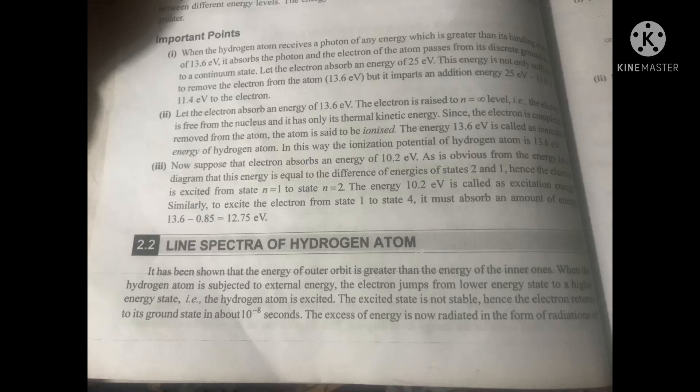We are going to discuss the line spectrum of hydrogen atom. It has been shown that the energy of outer orbits is greater than the energy of inner ones. When the hydrogen atom is subjected to external energy, the electron jumps from a lower energy state to a higher energy state — that is, the hydrogen atom is excited. The excited state is not stable; hence the electron returns to its ground state in about 10 to the power of minus 8 seconds. The excess energy is radiated in the form of different wavelengths, which constitute spectral series characteristic of the atom emitting them.